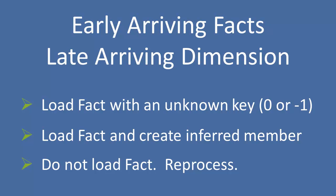An early arriving fact is simply a fact record which arrives before its related dimension record. We're going to go through that in detail in just a moment. But when this occurs, we first have to decide whether or not we're even going to load that fact. We could decide to not load it, possibly queue it to be reprocessed at some later time when the dimension record is in place.